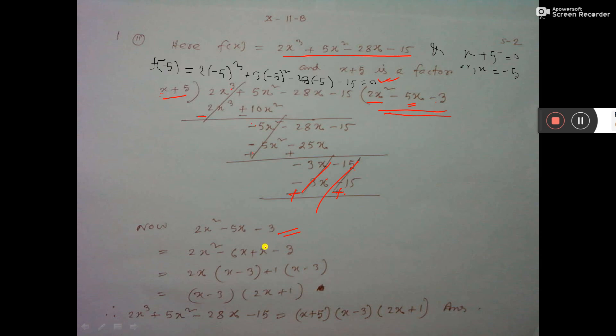And do middle term factorization. Here you see, break middle term. This 3, 2, 6. You break 6 into 1. So 6 minus 6x plus x. Now factorize, you are getting these 2 factors. So one factor you have got here, x plus 5, and another 2 factors you are getting now. So there are total 3 factors you have got.